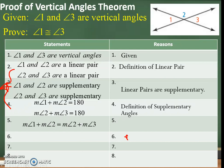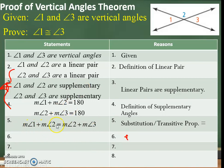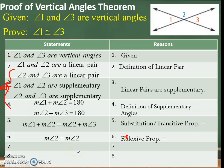Measurement of angle 1 plus measurement of angle 2 equals measurement of angle 2 plus measurement of angle 3 — they are equal to each other because both equal 180. That's the substitution property or transitive property of equality. Then, measurement of angle 2 equals measurement of angle 2 — that is the reflexive property of equality.